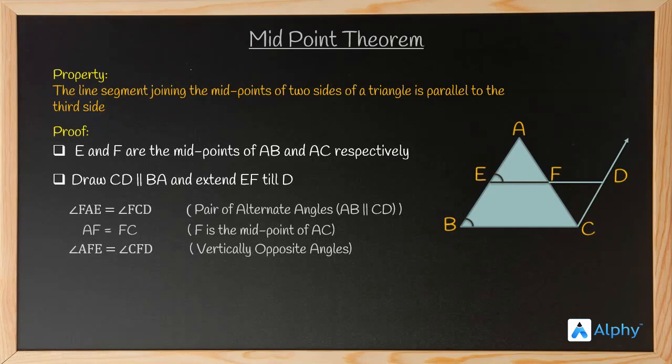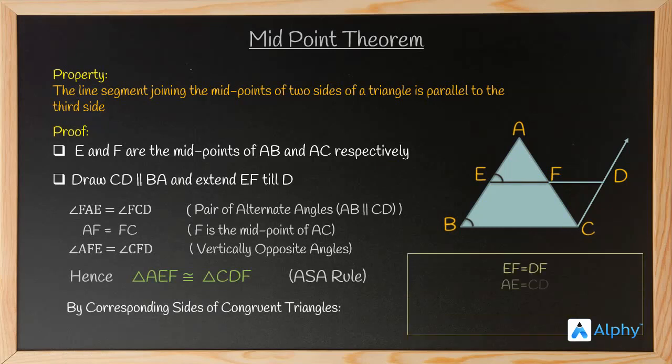So if you notice and if you know the properties of triangles, you can easily say that triangle AEF will be congruent to triangle CDF according to the ASA or the angle-side-angle rule. Now if the triangles are congruent, their corresponding sides will be equal too. So we can say that EF will be equal to DF and AE will be equal to CD as they are the congruent sides in both the triangles.